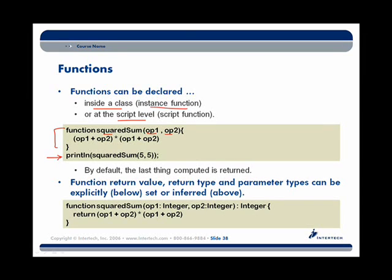You might notice that the last thing computed inside a function is what is actually returned, and that doesn't have to be explicitly annotated — we don't need a return keyword. However, the return type, parameters and their types can all be explicitly set using JavaFX syntax. Here's the same function as before, except the parameters are explicitly typed, the return value is explicitly typed, and the return keyword is present. All of this is optional, since JavaFX uses compile-time typing and functions can type themselves just as well as any variable can.